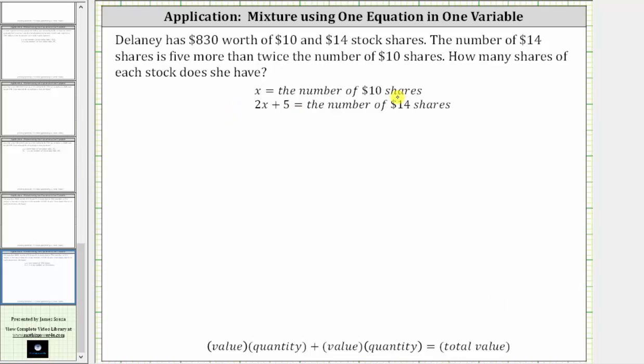So the value of the first stock is $10 per share, and we have x shares of the $10 shares, and therefore the total value of the $10 shares is $10 times x. Leaving the units of dollars off, that gives us 10 times x.